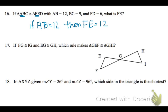On number 17, we've got FG and IG congruent, EG and GH congruent, and then by vertical angles those interior angles are congruent. So the two triangles are congruent by side-angle-side congruence.